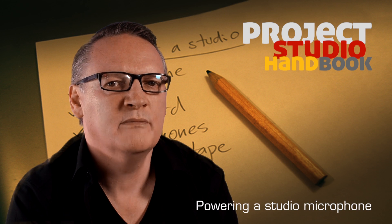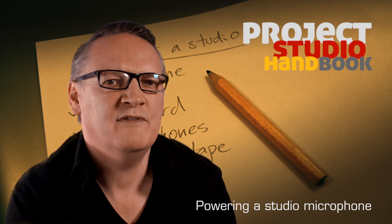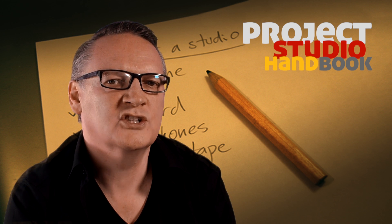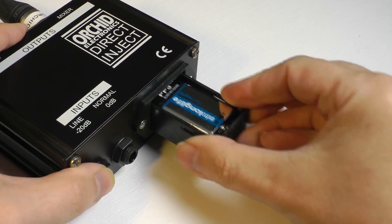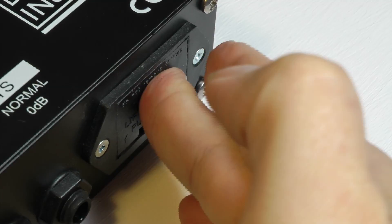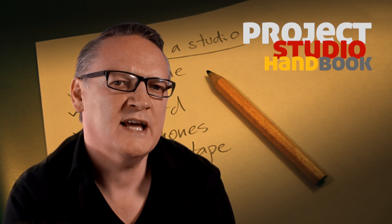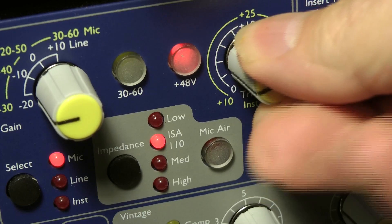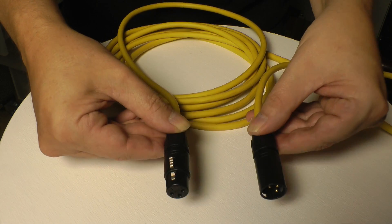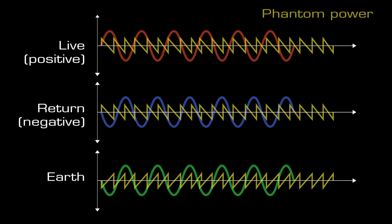Unlike dynamic and most ribbon microphones, capacitor and back electric microphones have electronics which require external power. This so-called phantom power may be supplied by a battery but more typically from a microphone pre-amplifier. The industry standard phantom power voltage is 48 volts and can be sent to a microphone down an XLR cable from a microphone pre-amplifier without interfering with the audio signal travelling in the opposite direction.